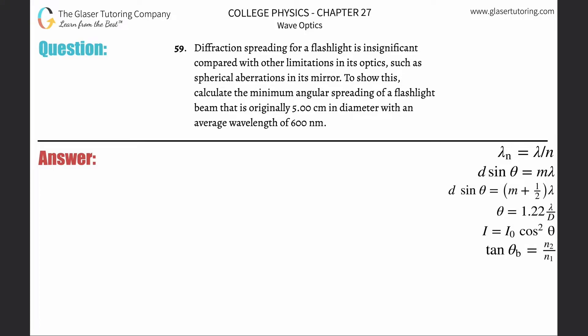Number 59. Diffraction spreading for a flashlight is insignificant compared with other limitations. To show this, calculate the minimum angular spreading of a flashlight beam that is originally 5 centimeters in diameter with an average wavelength of 600 nanometers.